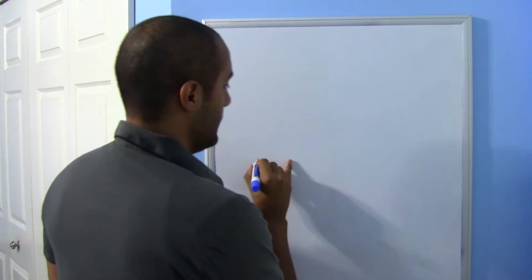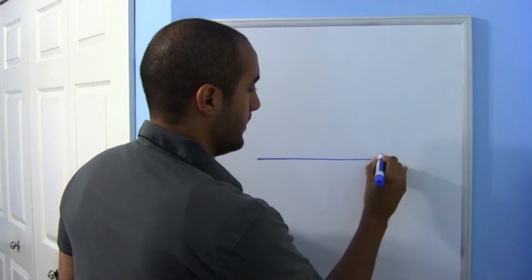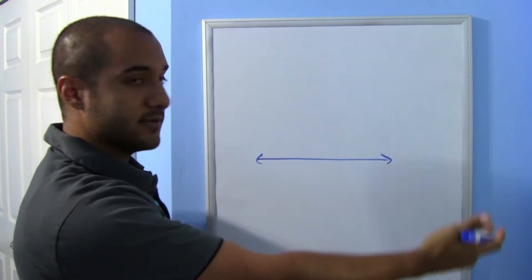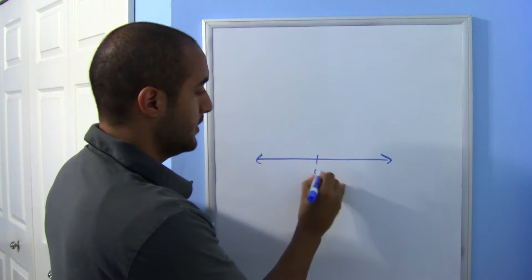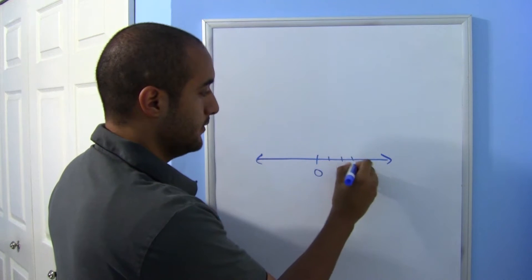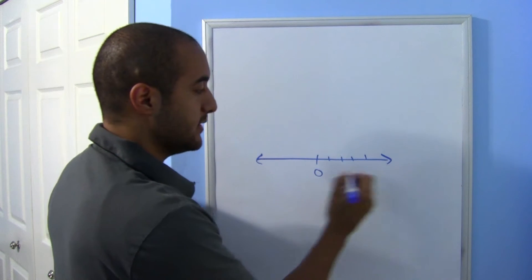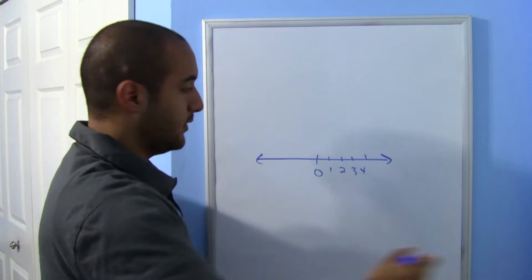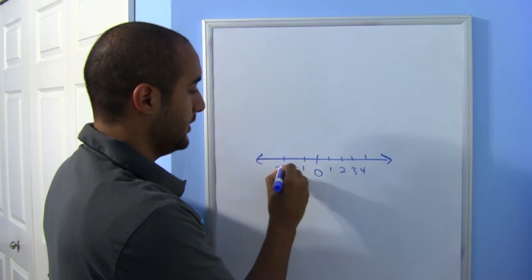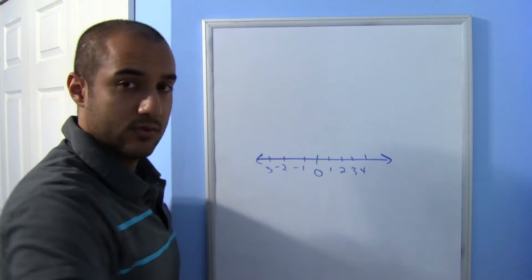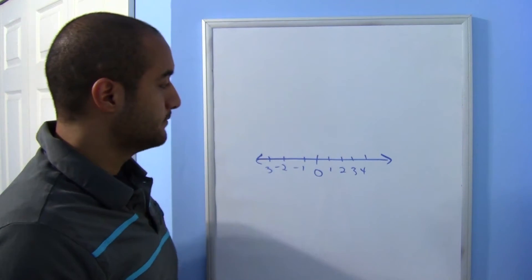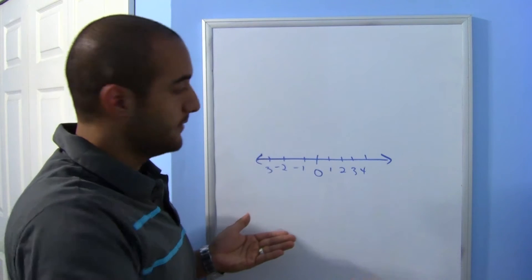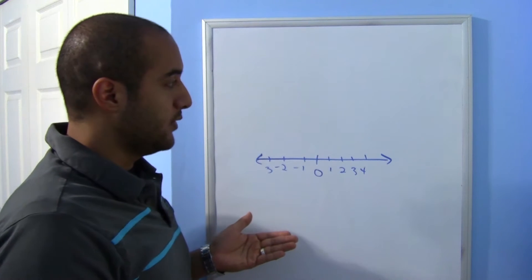If we look at a number line and we mark the positive and negative numbers — the positive side: 1, 2, 3, 4, and so on, and negative 1, negative 2, negative 3, and so on — we're just looking at one dimension.